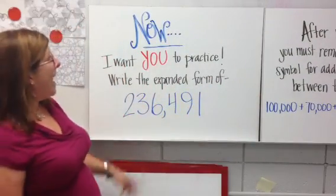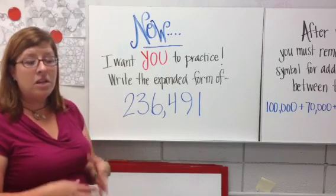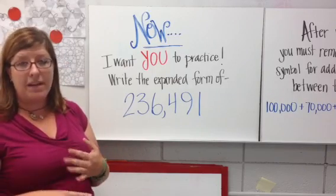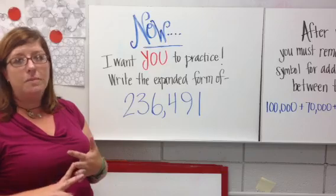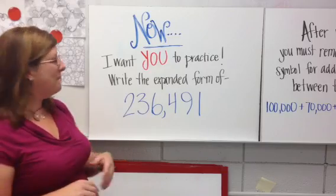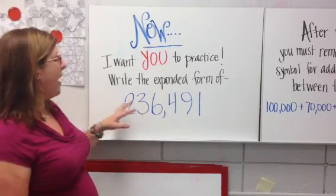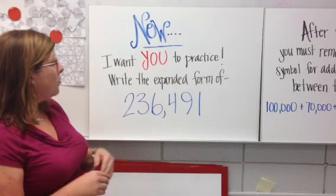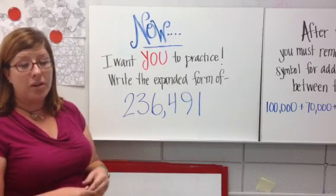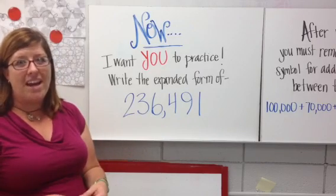So now I want you to practice. You can use your place value mats if you'd like. You can grab a place value mat, a dry erase marker, or use a piece of notebook paper. That's fine. Use the resources that you have. I want you to practice writing the expanded form of 236,491.